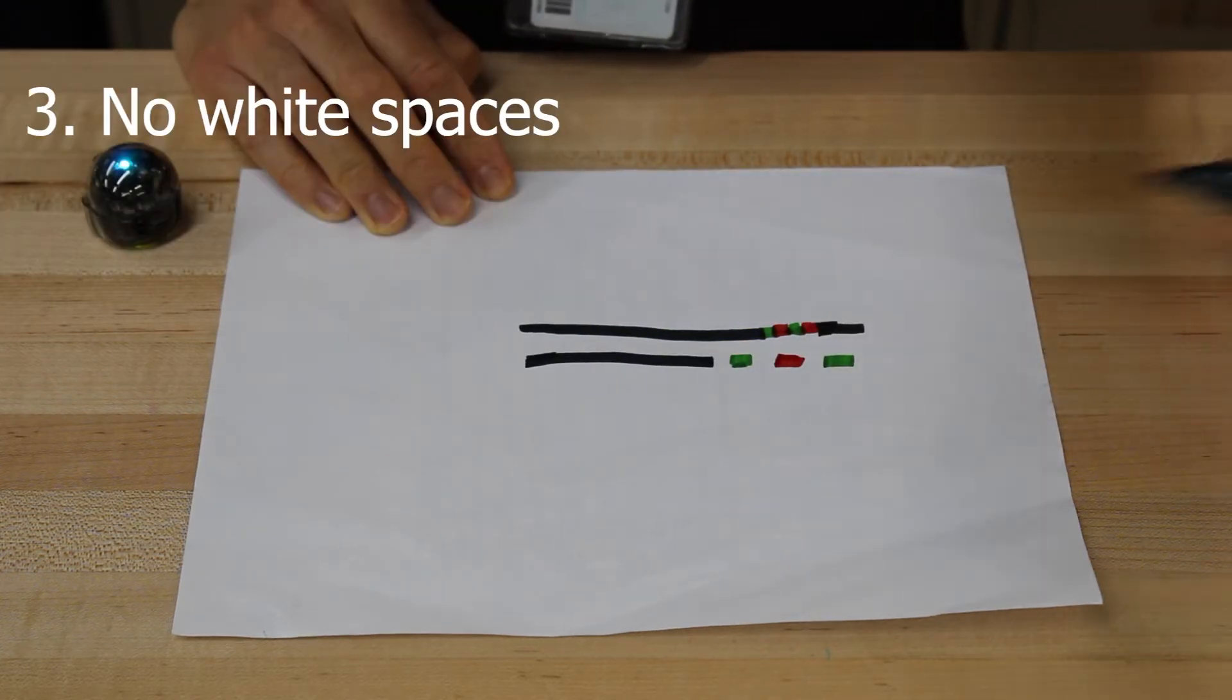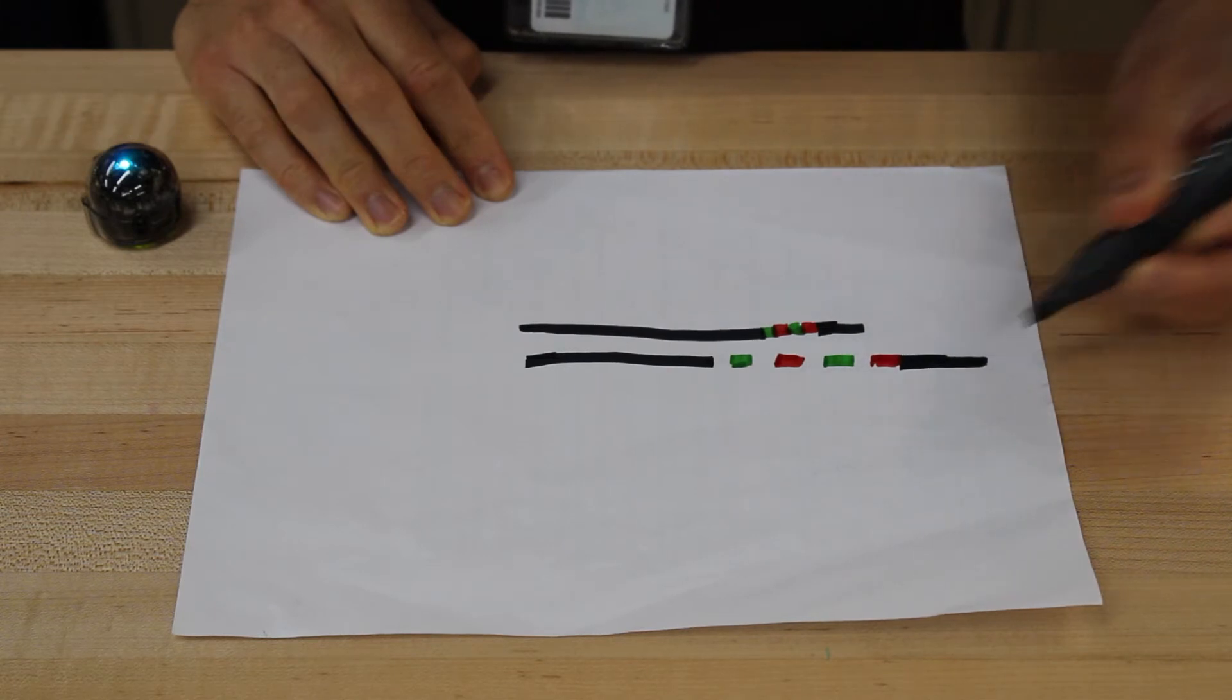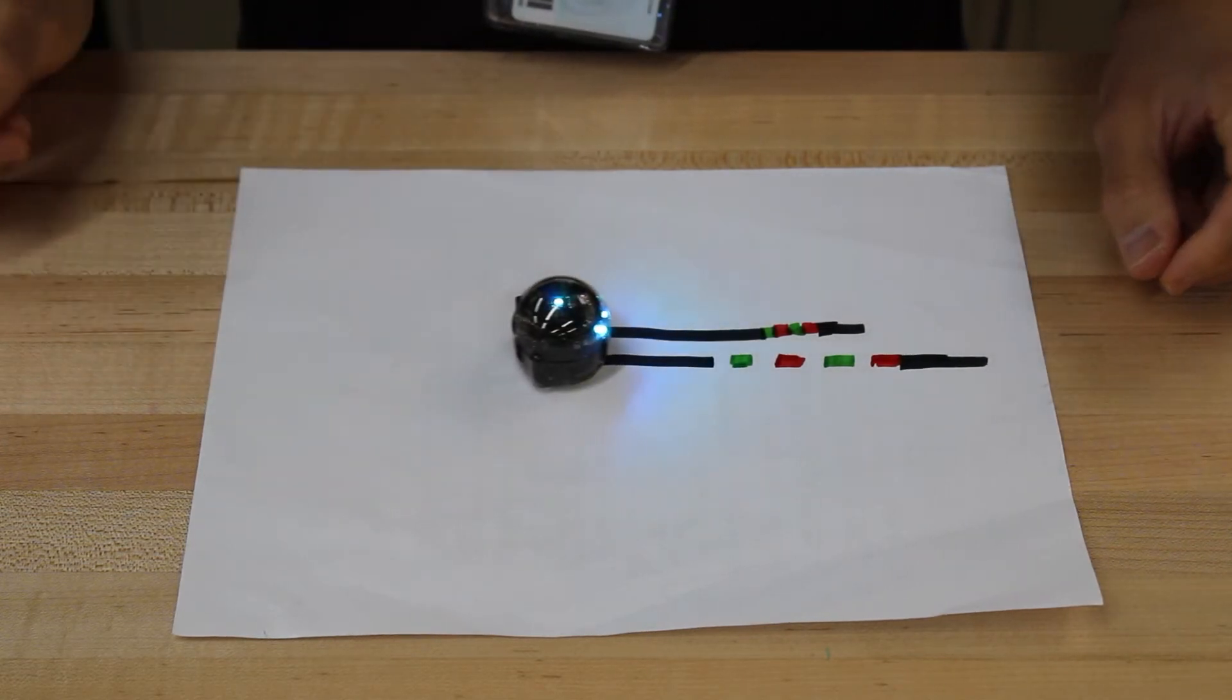Number 3. No white spaces. Make sure your color codes are connected or else Evo might read a white space as a break in the code.